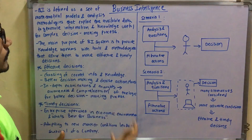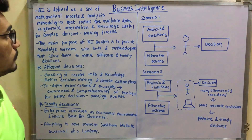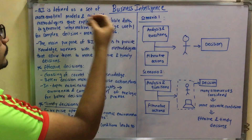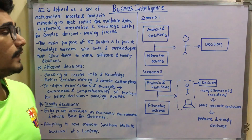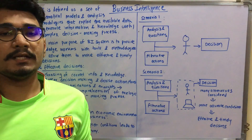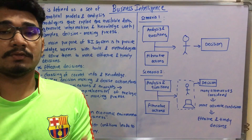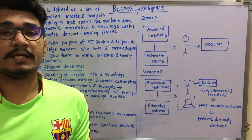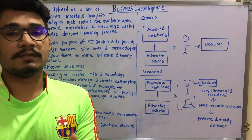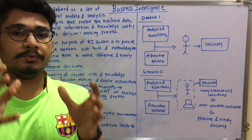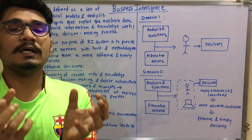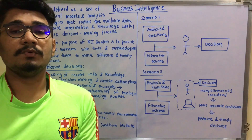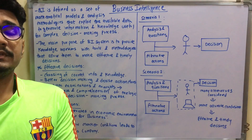BI is defined as a set of mathematical models and analysis methodologies that exploit the available data to generate information and knowledge useful for complex decision making processes. You have a set of mathematical models — equations, functions, or formulas — and analysis methodologies, such as transactional or historical data from the past ten years. These start as raw data, which you then exploit to generate information.